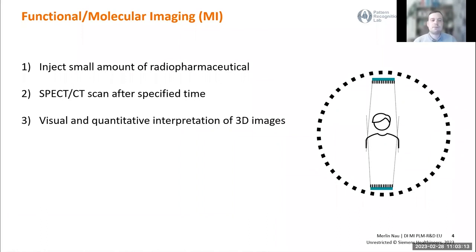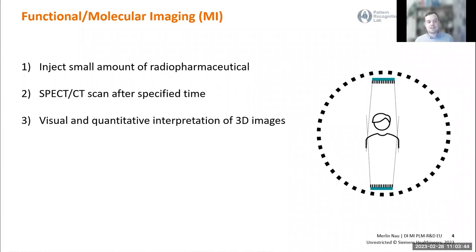For those not familiar with functional or molecular imaging, let me give a quick recap. In functional imaging, you start by injecting a small amount of a radiopharmaceutical to the patient. This is a radioactive isotope which emits gamma radiation and is bound to a tracer, which transports the isotope to a target tissue in the human body — maybe the bone, the brain, or the heart. After a specified time, you acquire a SPECT and a CT scan. The SPECT scanner has two detectors that rotate around the patient, and at each view these detectors take a so-called projection image.